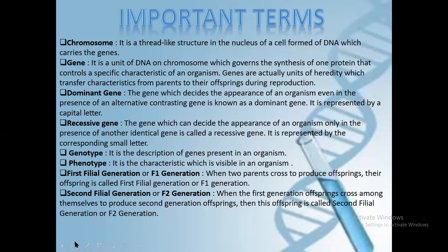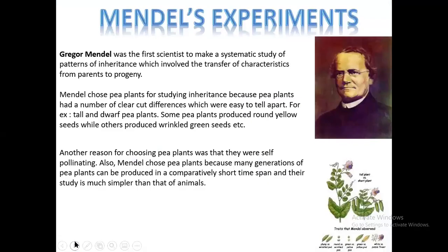Second filial generation or F2 generation: when the first generation offsprings cross among themselves to produce second generation offsprings, then these offsprings are known as the second filial generation or F2 generation.